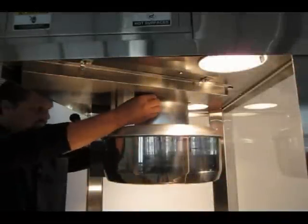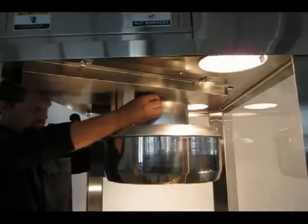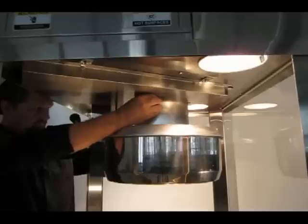First, loosen the two wing nuts that hold the ventilation tube to the sealing duct. Then rotate the ventilation tube and set it in the kettle.